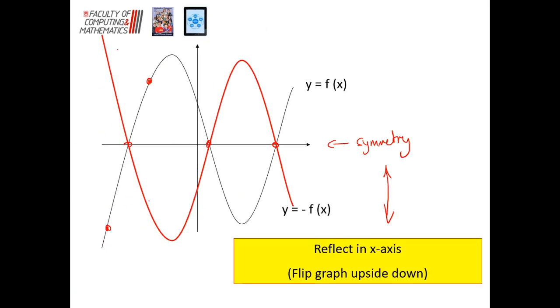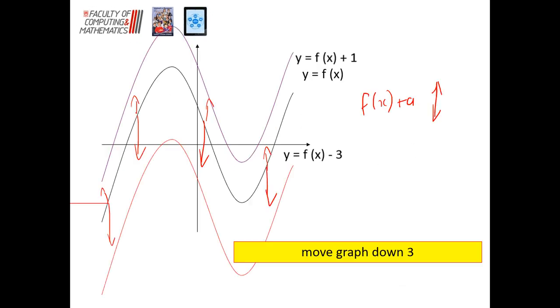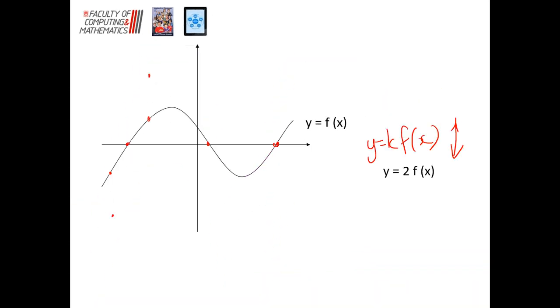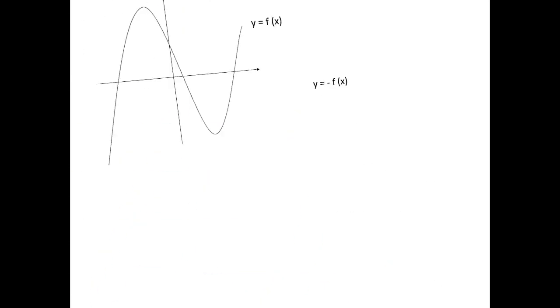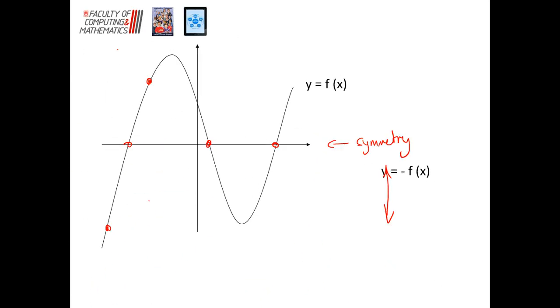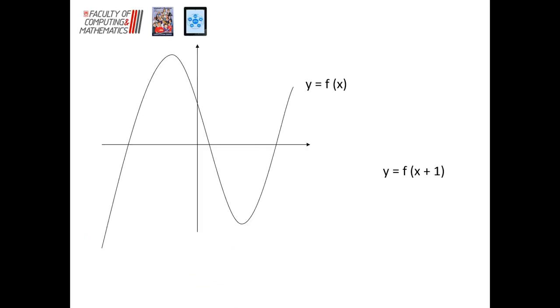Now look at those three rules. Everything we're doing is outside of your f of x — the plus one at the end outside the bracket, the two at the front outside the bracket, the negative at the front outside the bracket — it's all a vertical change, whether it's moving, stretching, or reflecting. It's happening up and down the way. The next set of things we're going to look at is everything that's happening inside the bracket.